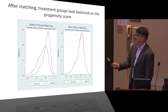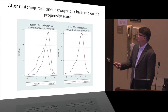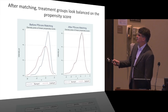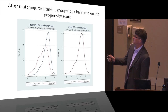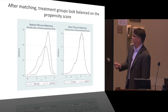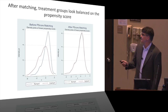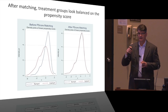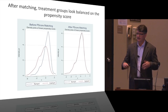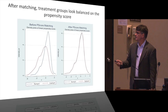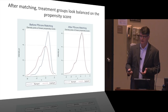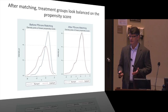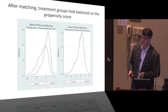After estimating propensity scores for a study, before matching the distributions were quite unbalanced, but after matching they formed a beautiful overlapping curve. With these two perfectly overlapping propensity score distributions, you say: these people all look the same — the only difference between the two groups is that one got a different drug, so any difference in outcomes must be due to that drug.